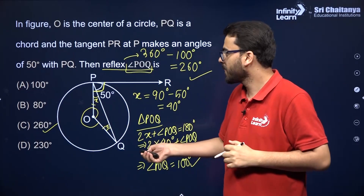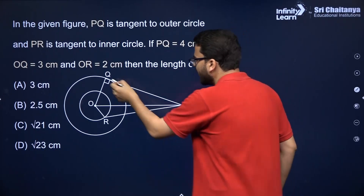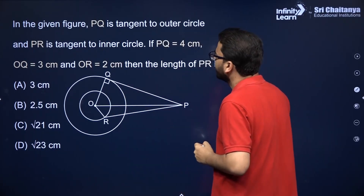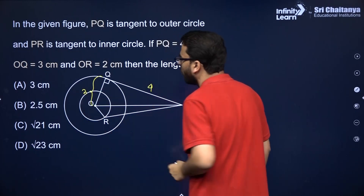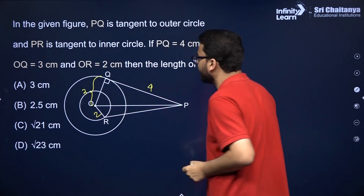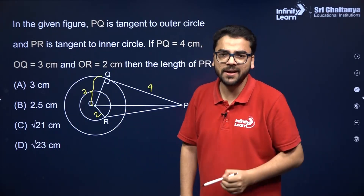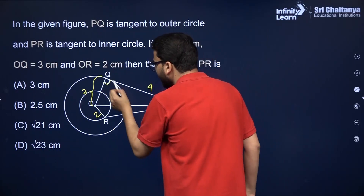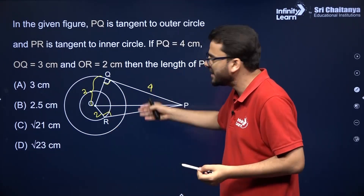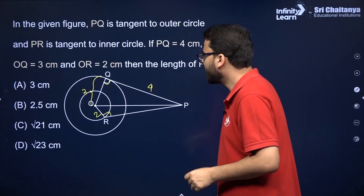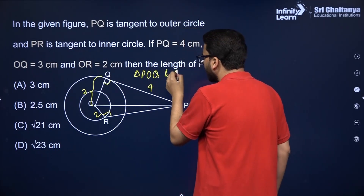Let us take the next MCQ. In the given figure, POQ is a tangent to the outer circle. POQ is given to be 4 centimeters, OQ is 3 centimeters, and OR is 2 centimeters. You have to find the value of PR. The tangent to a circle is perpendicular to the radius through the point of contact, so both angles are 90 degrees. We have two right-angle triangles: POQ and POR, with OP as the hypotenuse in both.